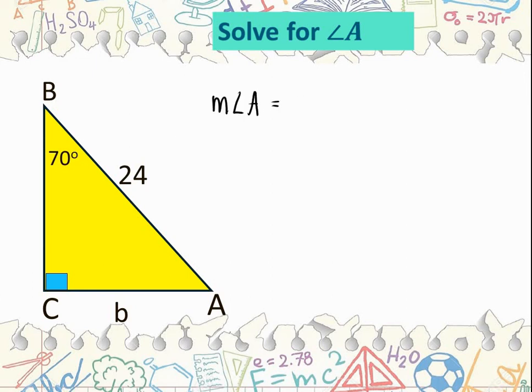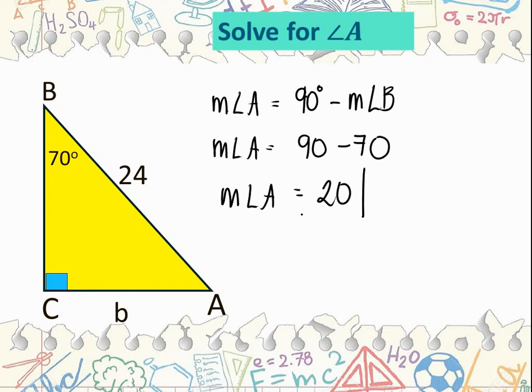To find the measurement of angle A, all we need to do is subtract the measurement of angle B from 90 degrees. So angle A equals 90 minus the measurement of angle B, which is 70. Therefore, the measurement of angle A is 20 degrees.